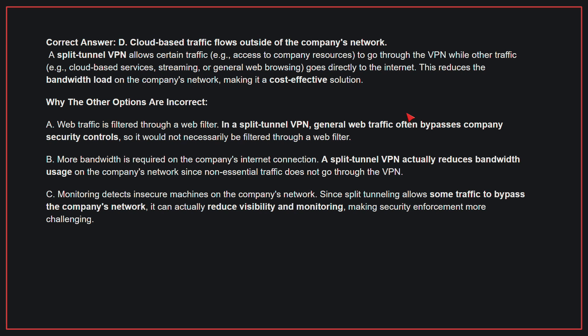Why the other options are incorrect: A, in a split-tunnel VPN, general web traffic often bypasses company security controls, so it would not necessarily be filtered through a web filter. B, a split-tunnel VPN actually reduces bandwidth usage on the company's network since non-essential traffic does not go through the VPN. C, since split-tunneling allows some traffic to bypass the company's network, it can actually reduce visibility and monitoring, making security enforcement more challenging. Therefore, the correct answer is D: cloud-based traffic flows outside of the company's network.